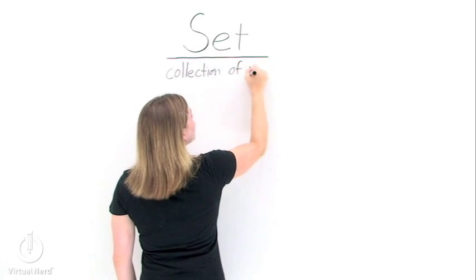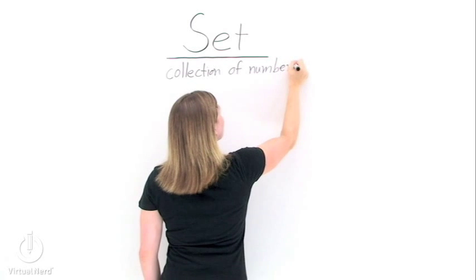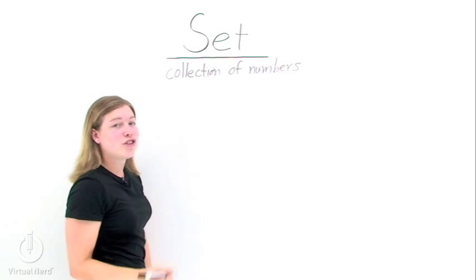You have rooks, pawns, kings, queens, all other sorts of pieces. In math, a set is just a collection of numbers.